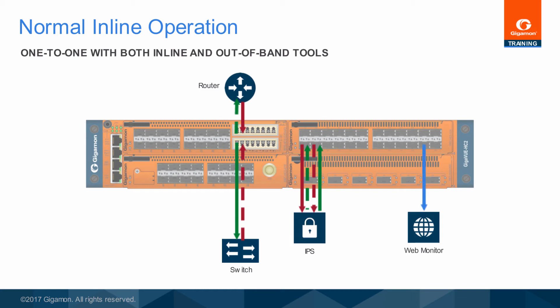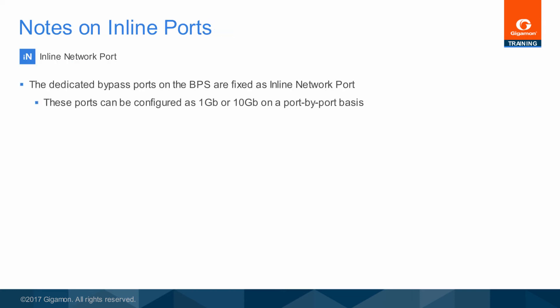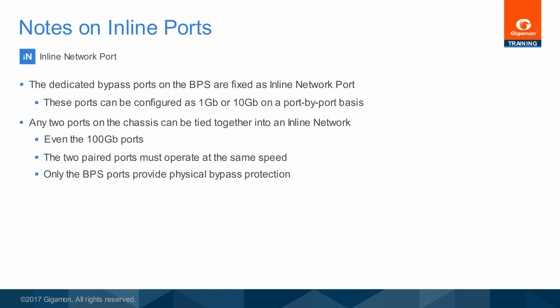Additional monitoring and security visibility is available by simultaneously sending a copy of passing packets to out-of-band monitoring tools. An inline tool does not have to be attached to the inline bypass module, but it must be on the same chassis as the inline network ports. Out-of-band tools can be anywhere on that same node or on any node in a cluster. The custom hardware ports on a fiber inline bypass module can be configured as either 1 or 10 gigabit bypass port pairs, and the copper tap ports can be configured as 1 gigabit bypass port pairs. For logical bypass configurations, any two same-speed ports on the same node can be configured as inline network ports.